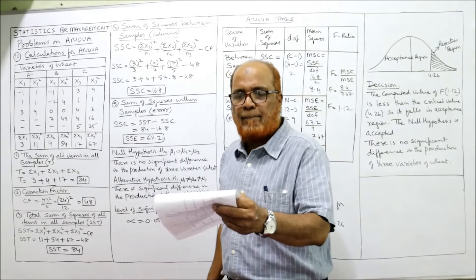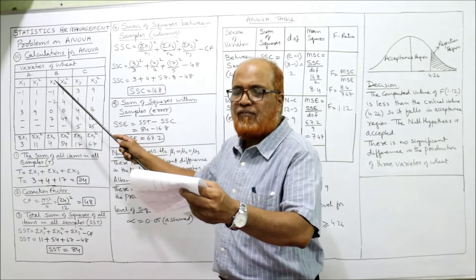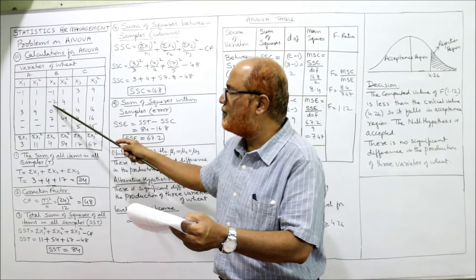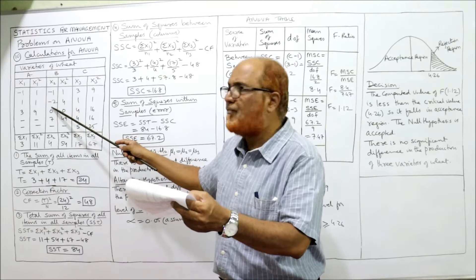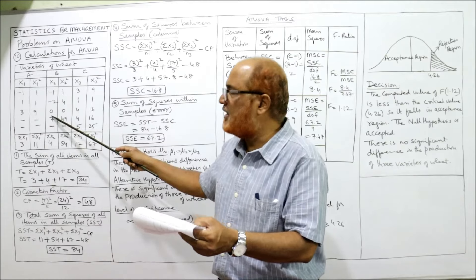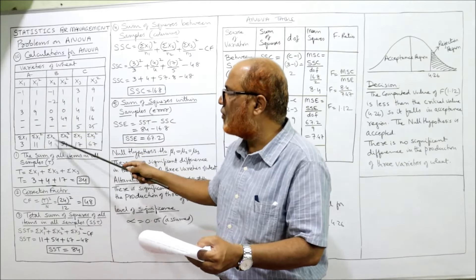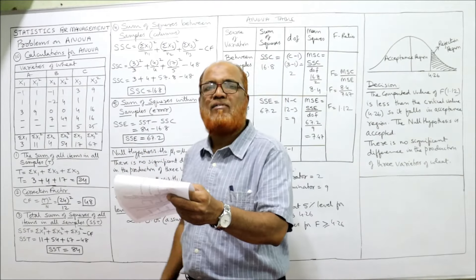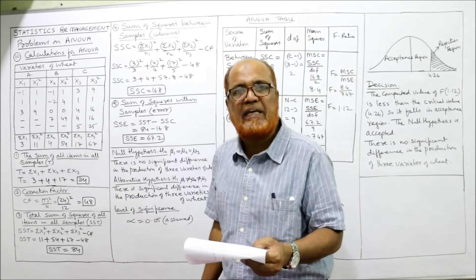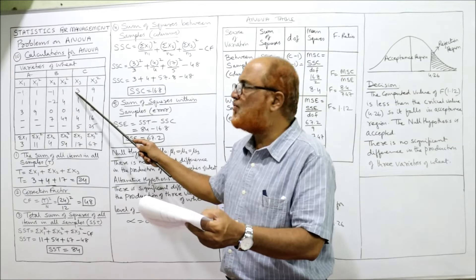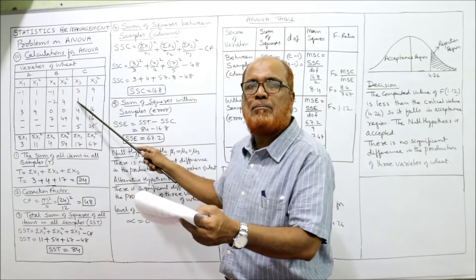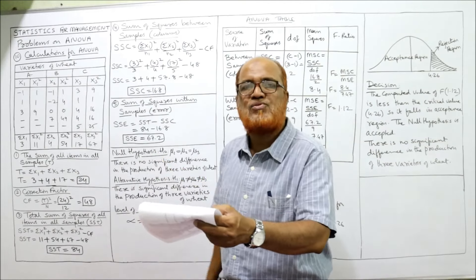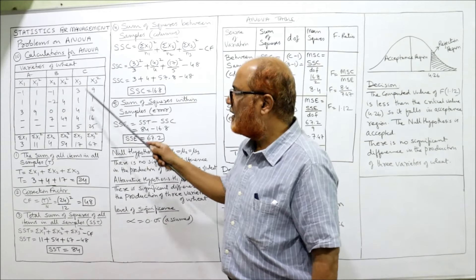For variety B: 14−15=−1, 13−15=−2, 15−15=0, 22−15=7. Total x2 = 4. Squared: 1, 4, 0, 49 — total x2² = 54. For variety C: 18−15=3, 16−15=1, 19−15=4, 19−15=4, 20−15=5. Total x3 = 17. Squared: 9, 1, 16, 16, 25 — total x3² = 67.